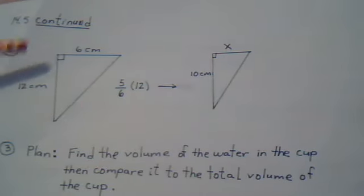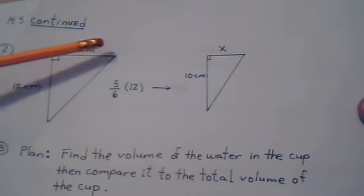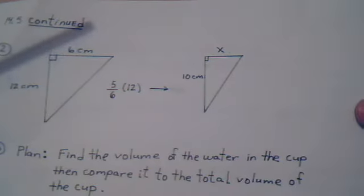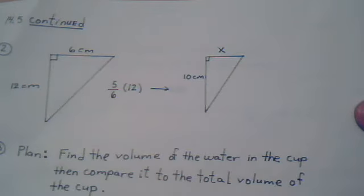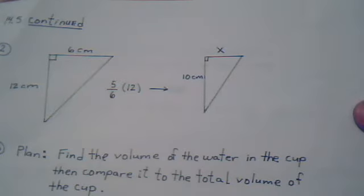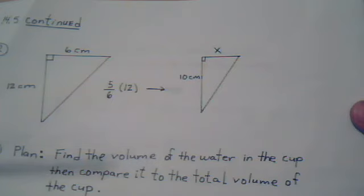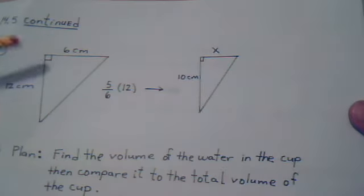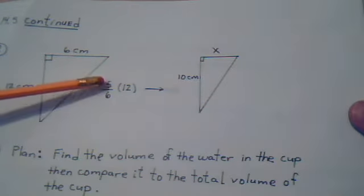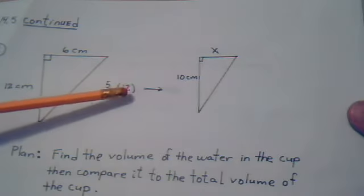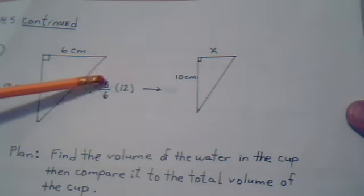So we labeled it with the information. Here's the large cone information and small cone information. The small cone is the one that has the water. They also tell us that the height of the smaller cone is 5/6 the height of the larger cone. So 5/6 of 12 would be 10. 12 divided by 6 is 2, times 5 is 10.